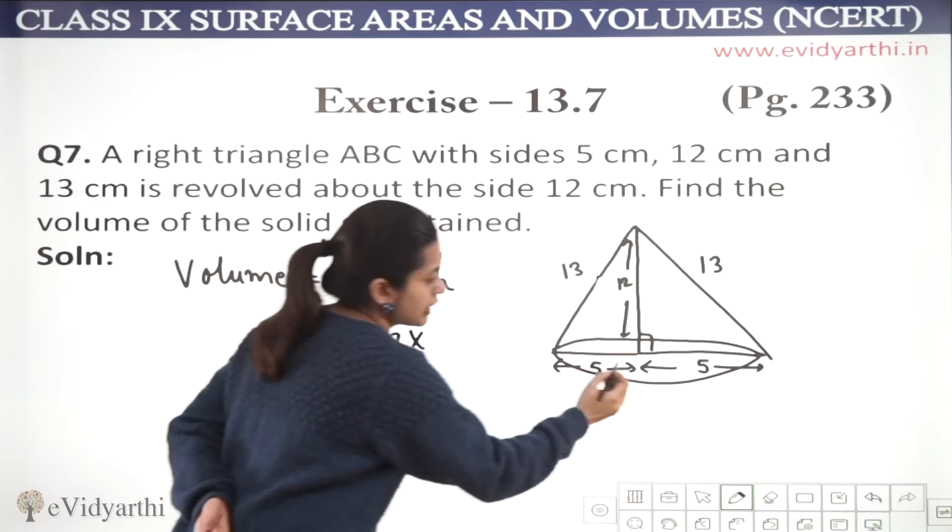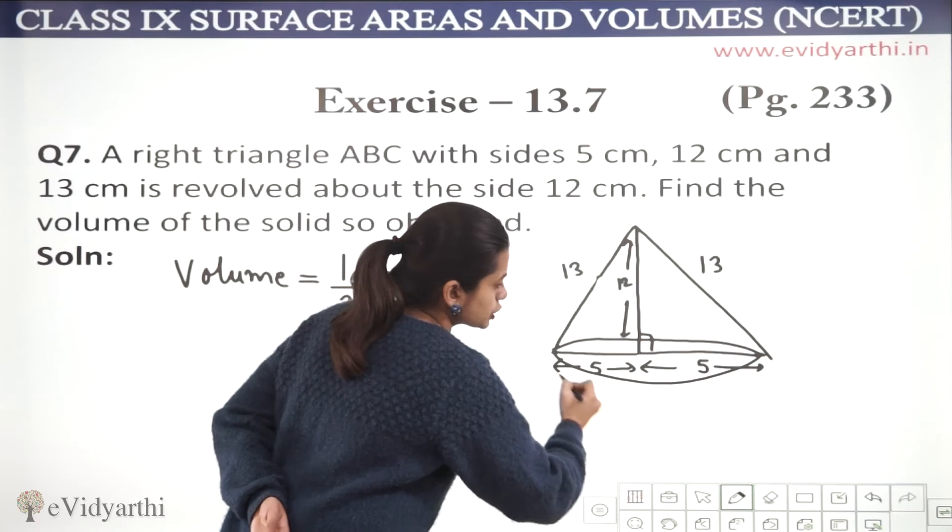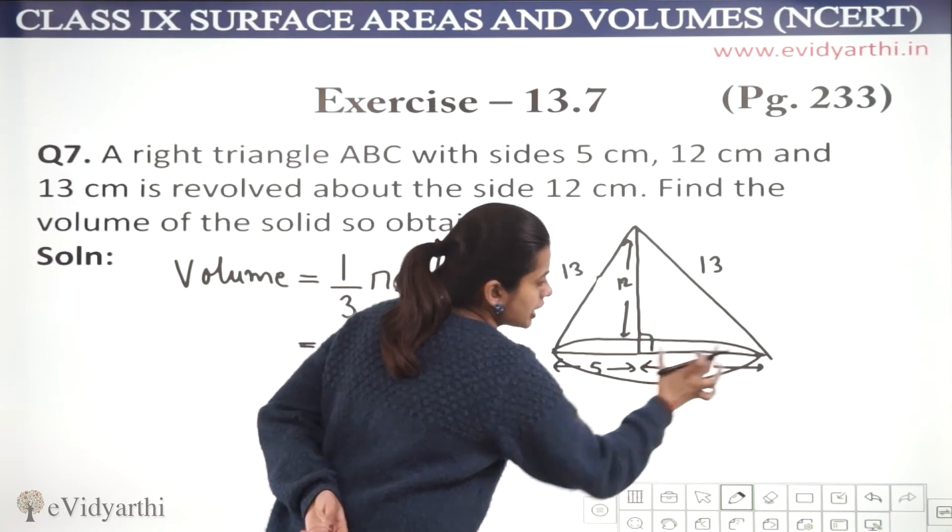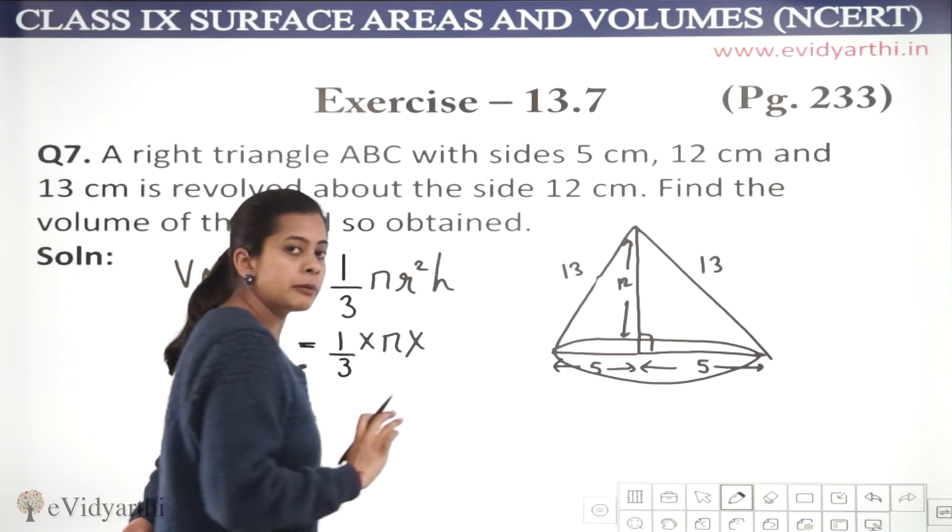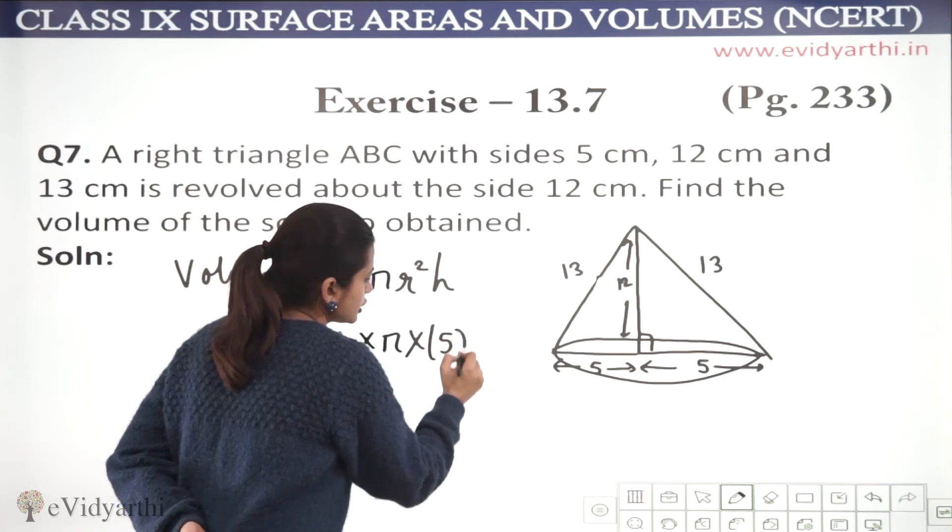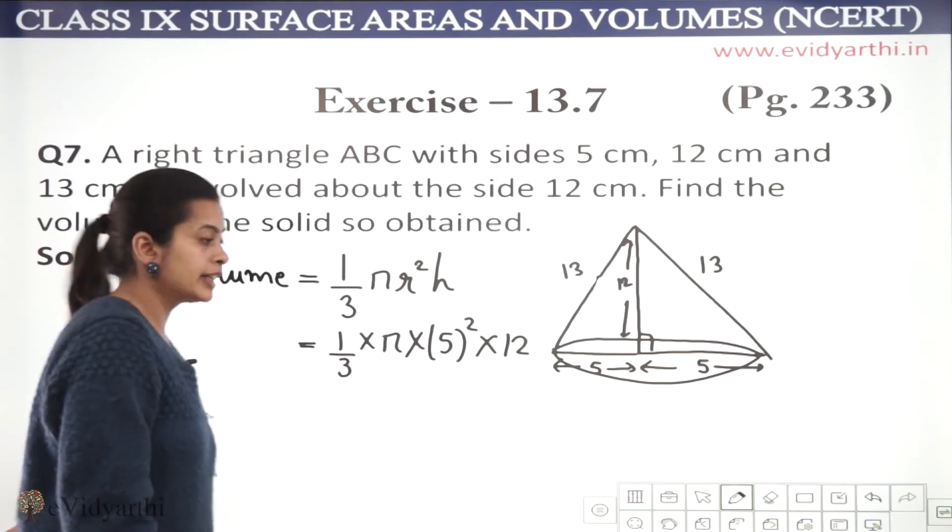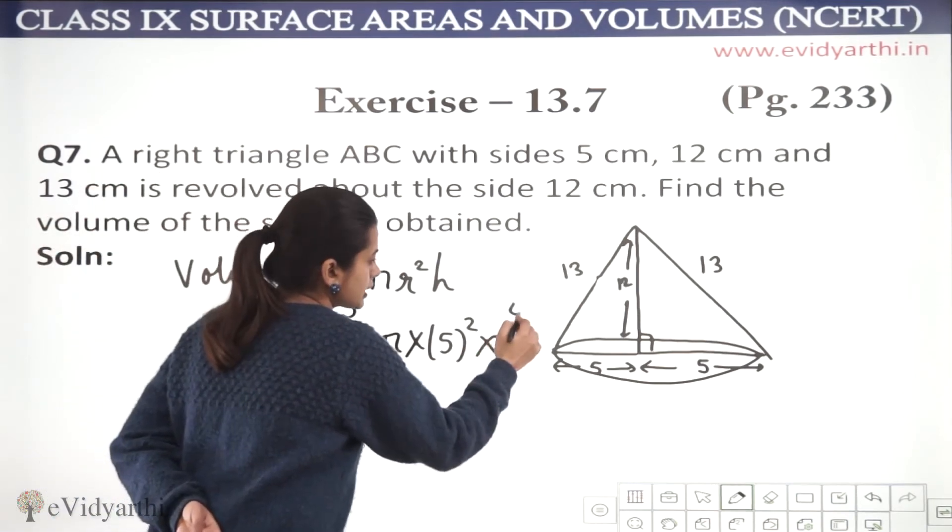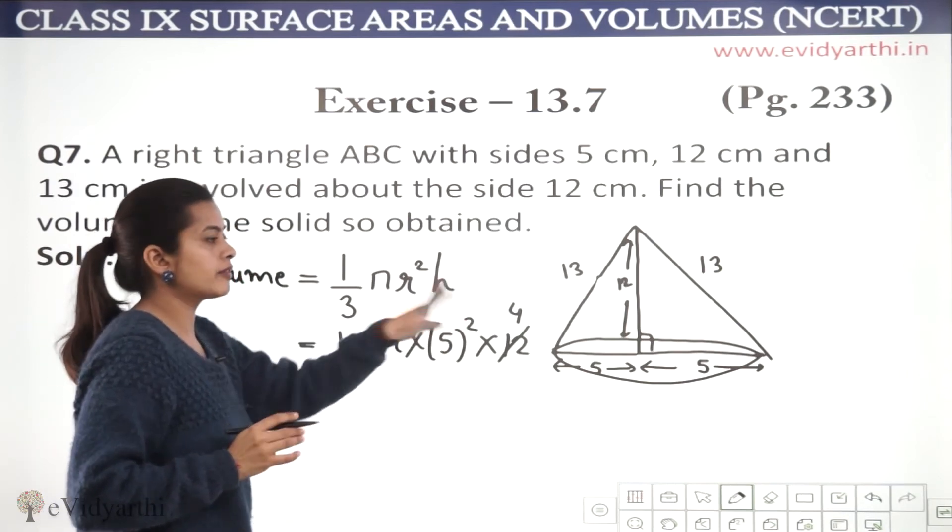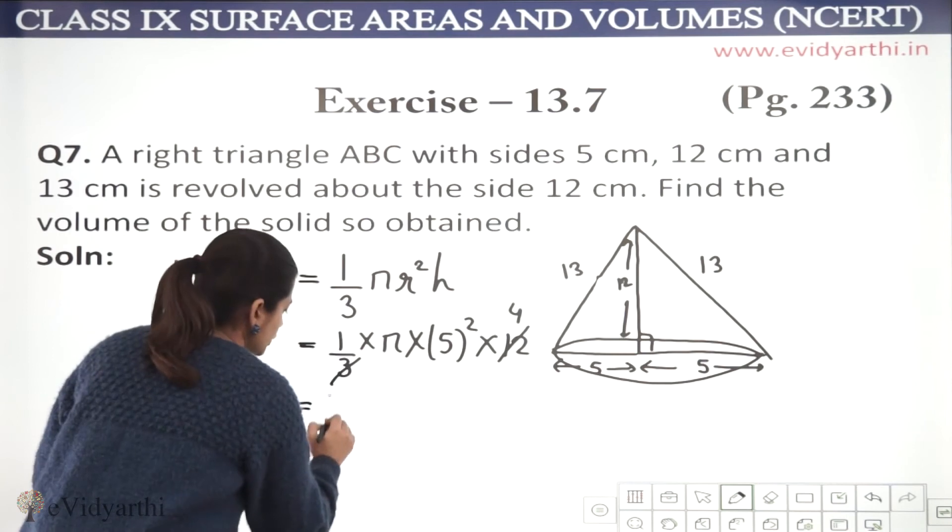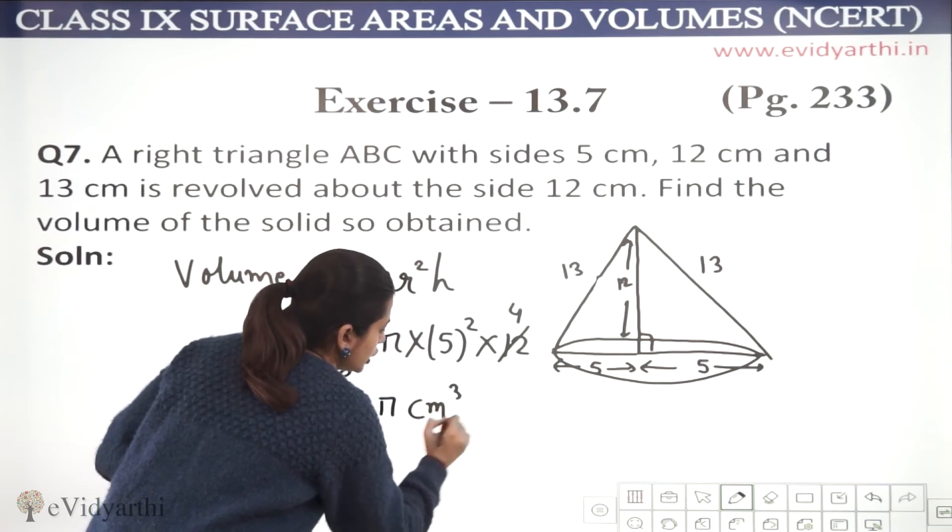How much is r? R is our one side, so this would be equal to 5. 25 into 4 is 100. So, this would be equal to 100π centimeter cube.